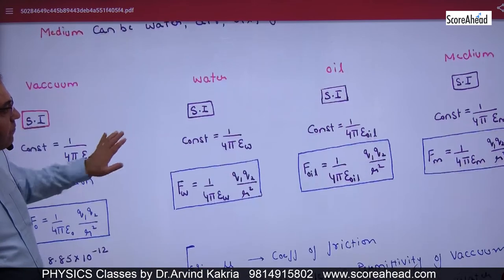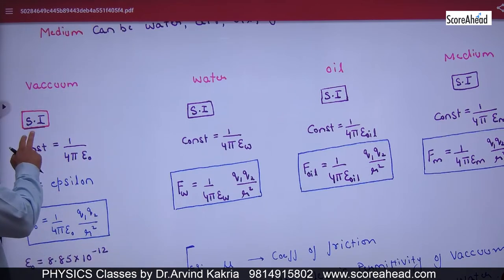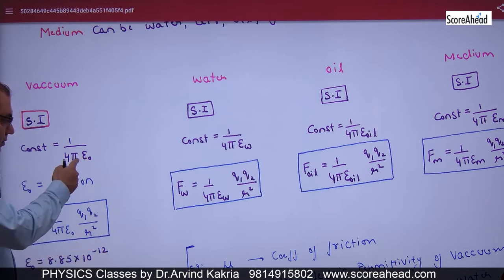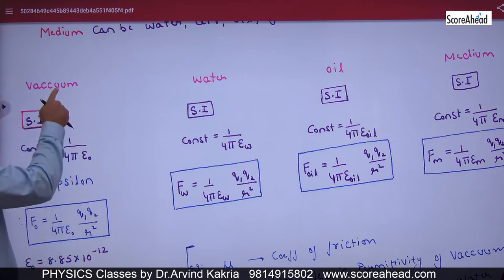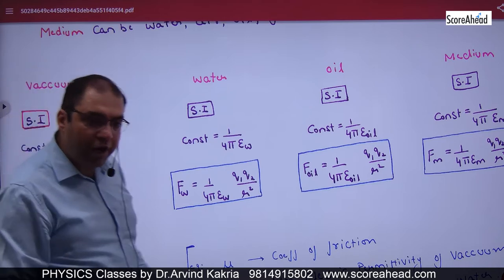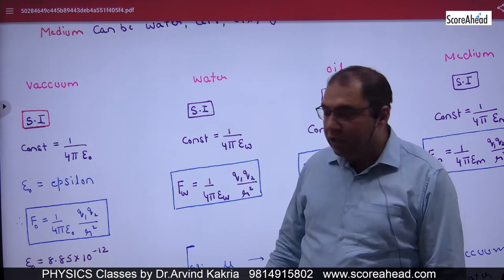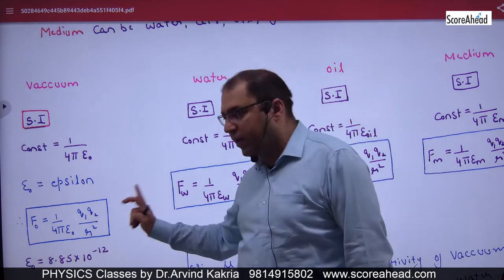If the medium is vacuum, the constant becomes 1 divided by 4πε₀, where ε₀ (epsilon naught) is the symbol for the permittivity of vacuum. The formula becomes F = (1/4πε₀)(Q1Q2/R²). The value of ε₀ for vacuum is 8.8 × 10⁻¹². So if two charges are in vacuum, you use this formula with that value.